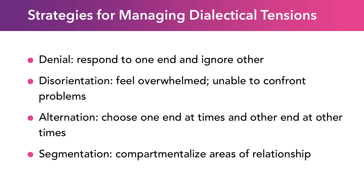Sometimes instead there's disorientation, where you feel completely overwhelmed and shut down. You might say, 'I thought marriage meant doing everything together — he doesn't want to come to yoga class with me; that's it.' Alternation is when sometimes you're more open and sometimes more private, or: this weekend we'll spend together and next weekend we'll do our own thing. Segmentation means different parts of the relationship fall on different sides of the dialectic — for instance, we do grocery shopping together but go to movies separately with friends, because I'm not watching another war movie.